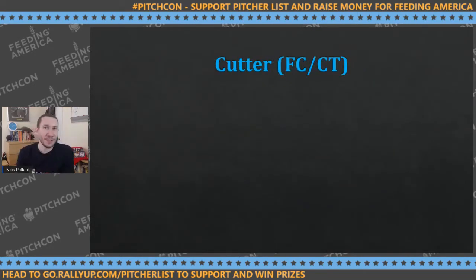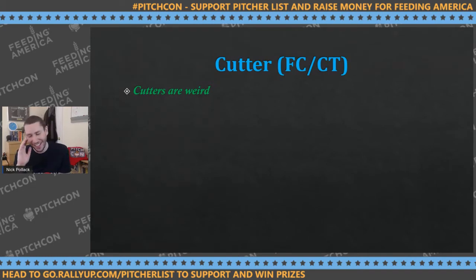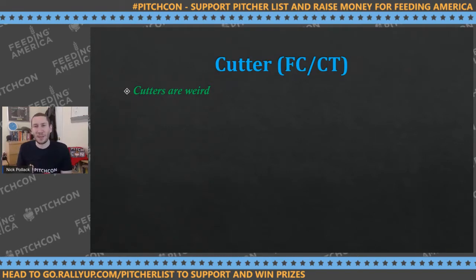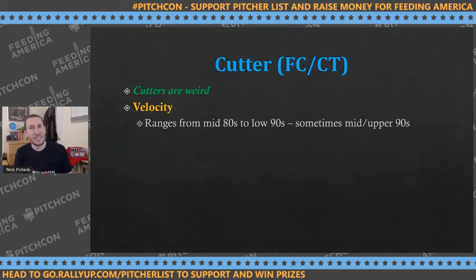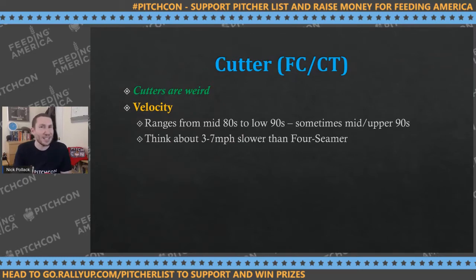Moving forward — cutters, labeled as FC or CT. Cutters are weird pitches. You watch them and think: is that a cutter? Is it a slider? Is it just a four-seamer? It can be very difficult to pick it out on the fly. Generally, if they are throwing a cutter, it's about three to seven miles per hour slower than the four-seamer. If it's on the slower end, it might actually be mislabeled as a slider.